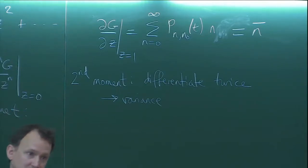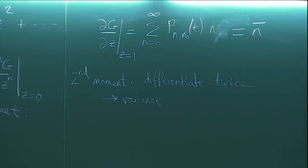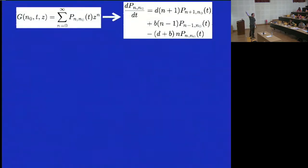Obviously the problem now becomes: how can we compute the generating function? If we could get it, it would be a beautiful thing. Fortunately for the birth-death process we can get it, but we have to do a bit of math. Once we have that function, you'll use it in the problems to do some calculations. So the challenge is to take the generating function and plug it into the master equation — to figure out how these two things play together.